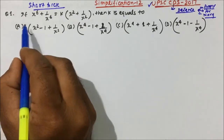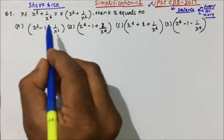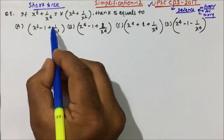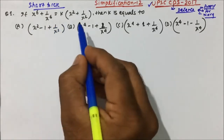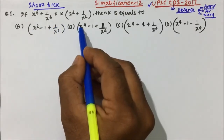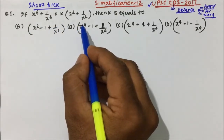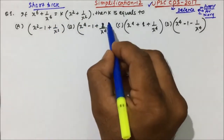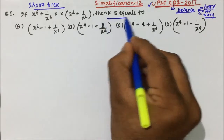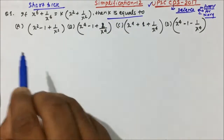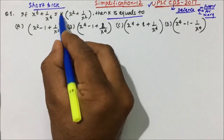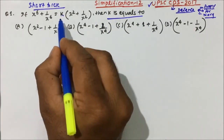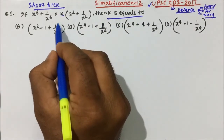My question is: if x to the power 6 plus 1 by x to the power 6 is equals to k into x squared plus 1 by x squared, then k is equals to which value? So you have to basically find out the value of k.